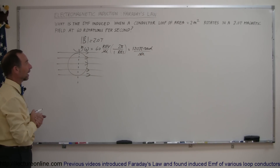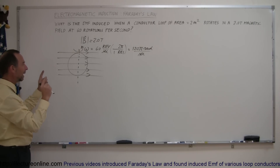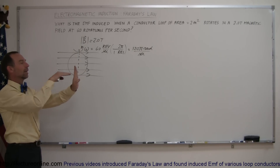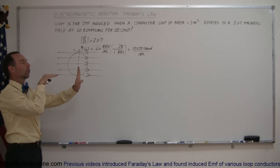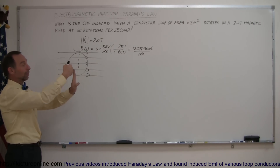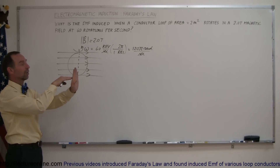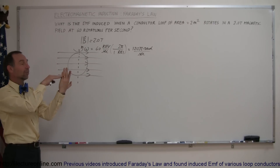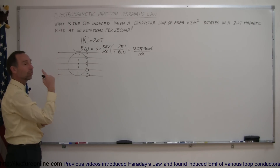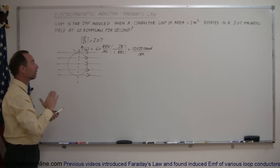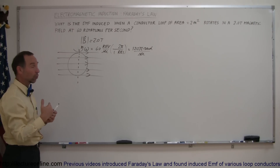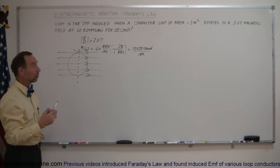As the loop is rotating, sometimes the magnetic field will go through the loop because the plane is perpendicular to the magnetic field. But as it rotates, the effective area becomes zero, then maximum again, then zero, then maximum. So as the loop is rotating, the flux through the loop is constantly changing, and a changing flux produces an EMF.